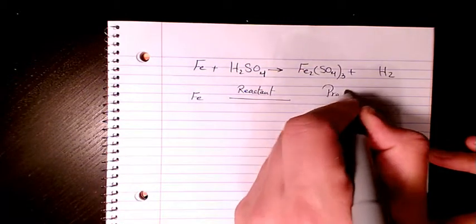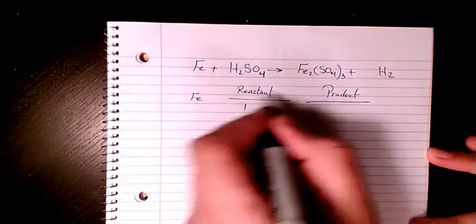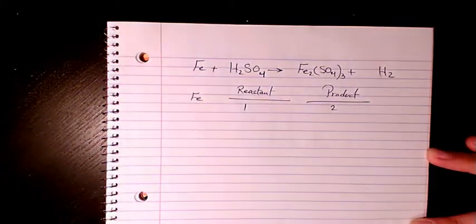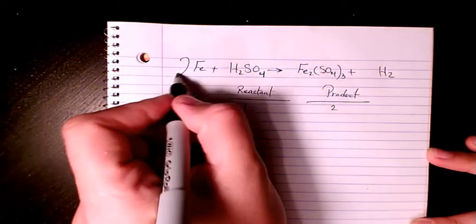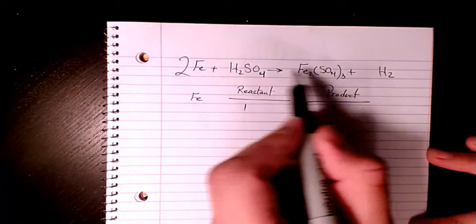Let's see what we have here. We have one Fe in this case, we have two in the product side, so I need to put two in here. Then here SO4, we have one in this side and we have three on the product side, so I'm going to have it as three.